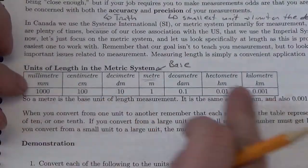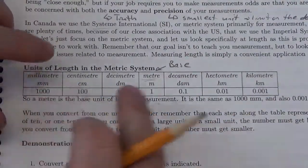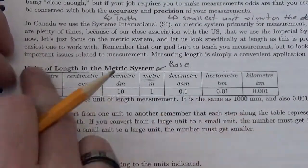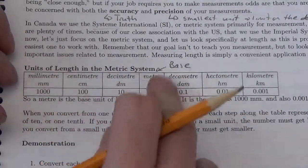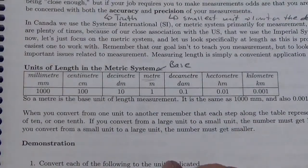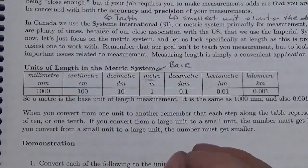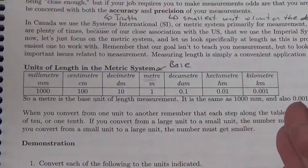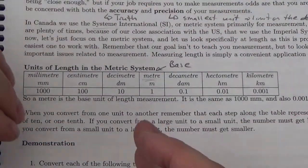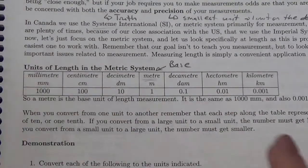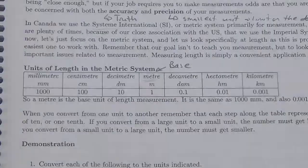When you're looking at the chart, find the two prefixes you're comparing, figure out which one you're converting to, count the number of jumps, and move the decimal that many places. Going from a small to a large unit, the number gets smaller. Going from a large to a small unit, the number gets larger. Now let's take a look at some examples.